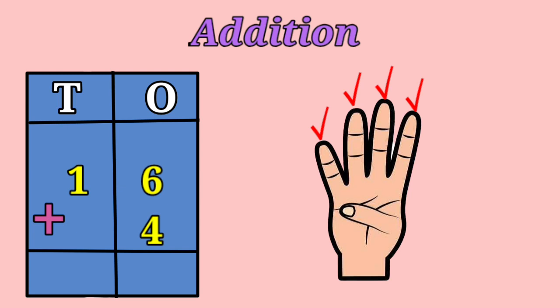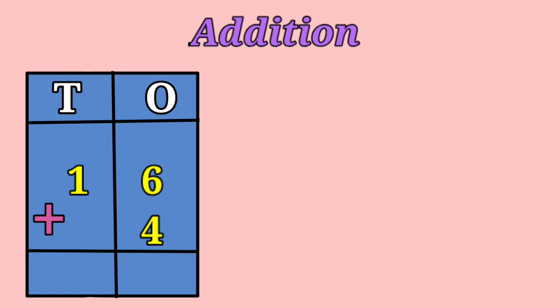Here we got 2-digit numbers in 1's place. But children, we cannot write 2-digit numbers in a single place value. So what shall we do now? We should put 0 in 1's place and carry forward the digit 1 in 10's place. Now in 10's place, we have 1 plus 1. So 1 plus 1 will be 2. Therefore, 16 plus 4 equals to 20.